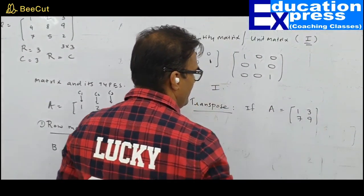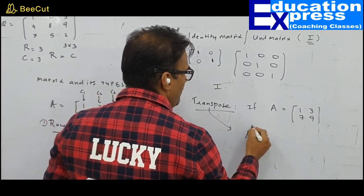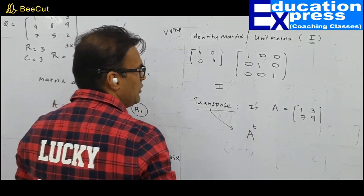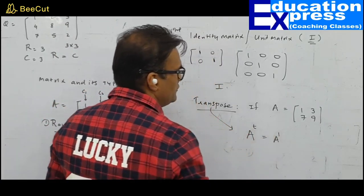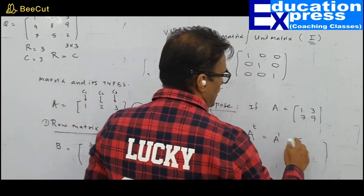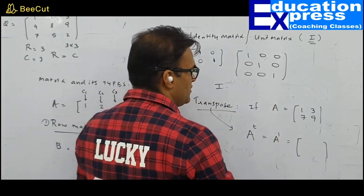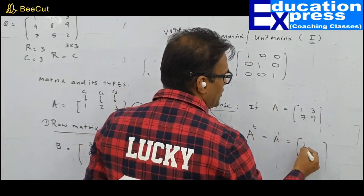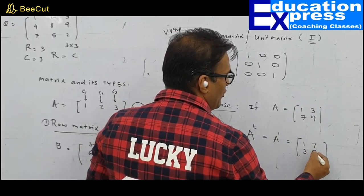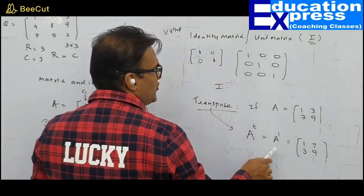We can also have a transpose matrix. If matrix A = [1, 3, 7, 9], then the transpose of A, denoted A^T or A', is obtained by interchanging rows to columns. The row [1, 3] becomes a column, and the row [7, 9] becomes a column. So if this is A, this is the transpose of A.